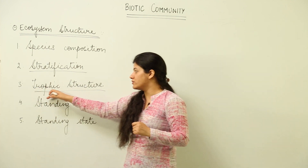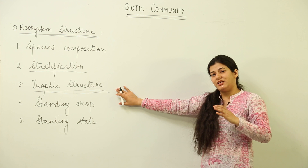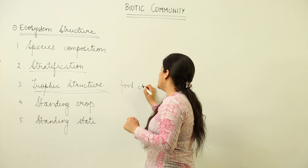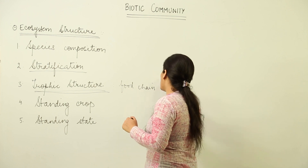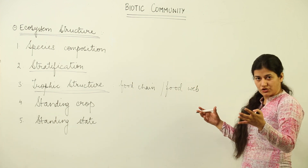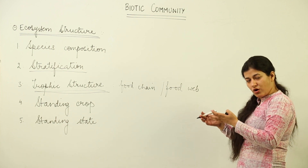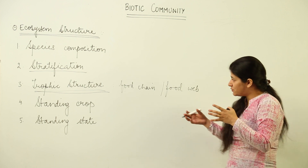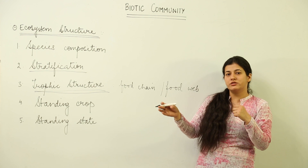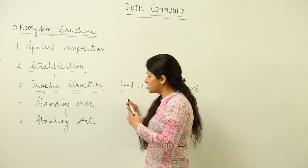Next, we have the trophic structure. When studying an ecosystem, we must examine its trophic structure — the interactions in terms of food chains and food webs. Whatever food chain or food web exists within an ecosystem represents an interspecific relationship where organisms are connected by their requirement for food. It also deals with the productivity of the system.